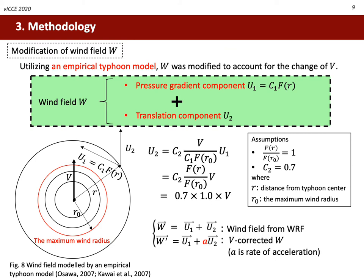Next is the modification of wind field W. Wind field is also changed by the variation of translate speed. A fast typhoon generates stronger wind and a slow typhoon generates weaker wind. In order to take account for the translation effect on wind field, an empirical typhoon model was utilized, in which the wind field was expressed as a vector summation of two types of wind source: the pressure gradient component U1 and the translation component U2. U2 was formulated as 70% of the translation vector under certain assumptions, meaning U2 was deemed proportional to the translation speed. The new corrected wind field W' could be defined as the second formula below, where U2 was simply multiplied by the rate of acceleration A. For example, in the case of 200%, A should be 2.